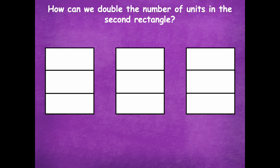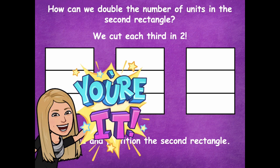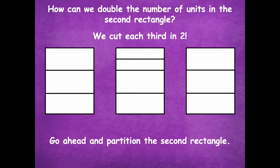So how can we double the number of units in the second rectangle? We have three right now — how could we double them? We could cut each third in two. So go ahead and partition the second rectangle — cut each third into two, just your second middle rectangle there. Pause the video. Here's how we can do that: split it, cut each one into two.